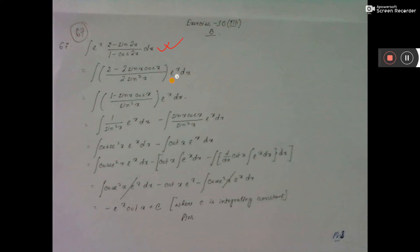E to the power x you take later. Sin 2x formula: 2 sin x cos x, and 1 minus cos 2x formula: 2 sin square x. Take 2 common and do cancellation, then this is left.